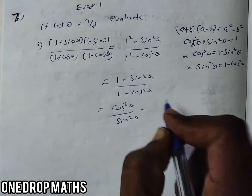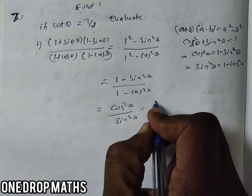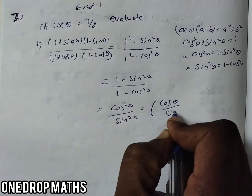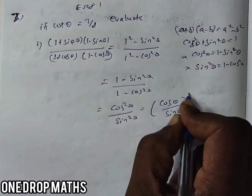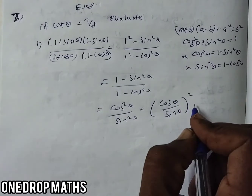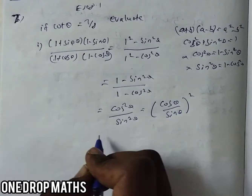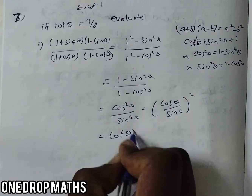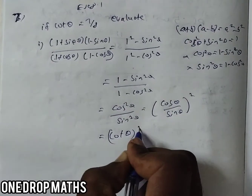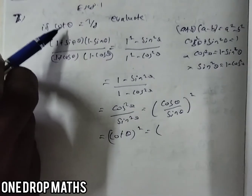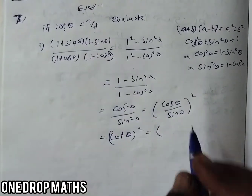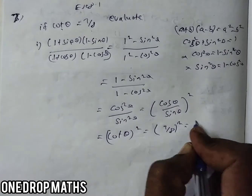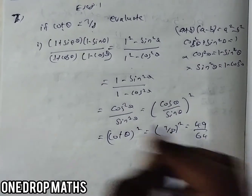Now both have a square, so we can write the whole expression as (cos theta by sin theta) the whole power 2, which is cot squared theta. We know the value of cot theta is 7 by 8, so substituting 7 by 8, the whole square gives us 49 by 64.